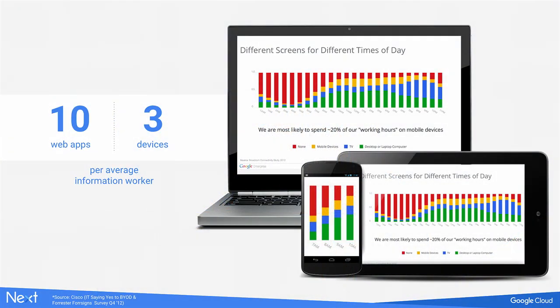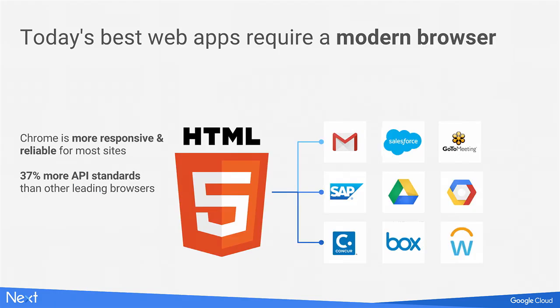Every application must run on every device, and users expect it to be seamless across corporate-issued and often personal devices. Today's information workers on average use 10 web apps across three devices to do their job. Today's best business applications like Salesforce, G Suite, and Workday are all web-based. Even traditional enterprise vendors like SAP are now building their new applications for the web based on HTML5, and they work very well in Chrome.